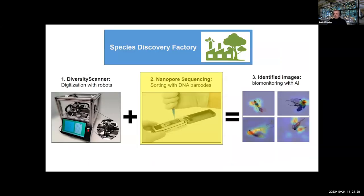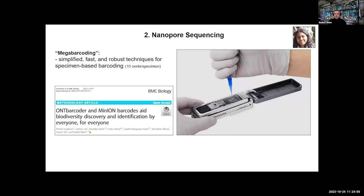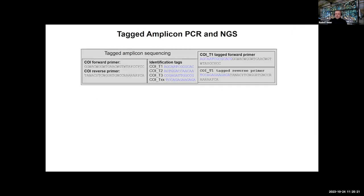Imaging alone doesn't help because then we have images of unknown, unidentified specimens. So the next step is barcoding. We emphasize the use of portable sequencers costing very little, making it feasible to build a barcoding lab using a MinION sequencer in many different locations. What we're doing is known as mega barcoding. We have simplified the process to get a barcode for 10 cents, including all consumable costs, and we can do 10,000 specimens per flow cell, which also means 10,000 files to manage.